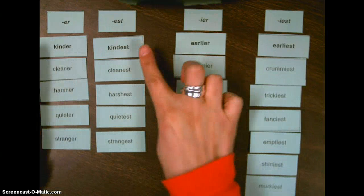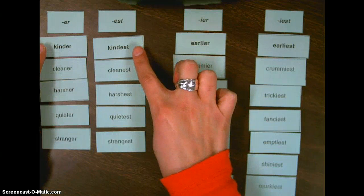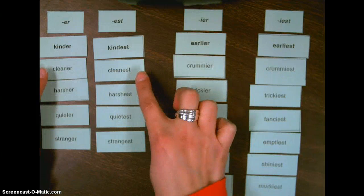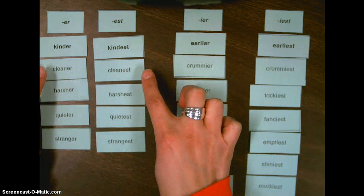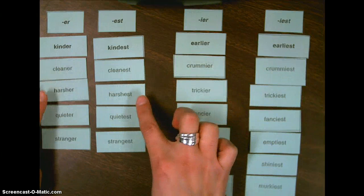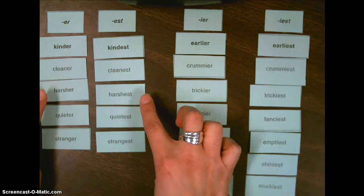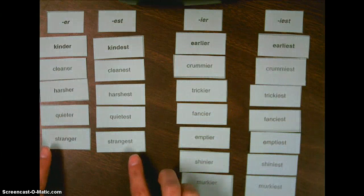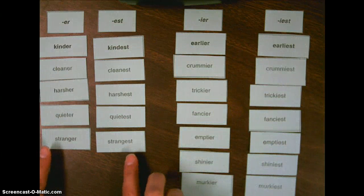So let's take a look at this category first. You should have kinder and kindest, cleaner and cleanest, harsher and harshest, quieter and quietest, and stranger and strangest.